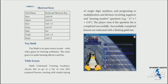The keyboard shortcuts are: New is Ctrl+N, Open is Ctrl+O, Save is Ctrl+S, Print is Ctrl+P, Quit is X, Undo is Ctrl+Z, and Redo is Ctrl+Y. That concludes the section on Tux Paint.